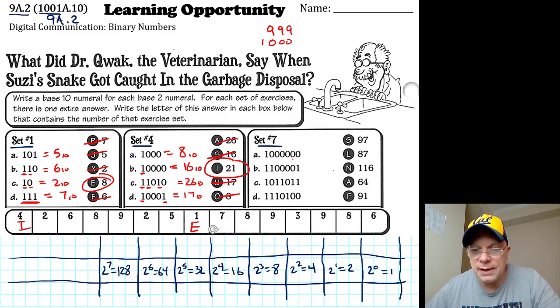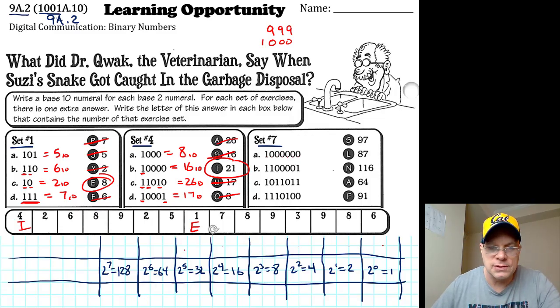Here I need to count how many digits. This is one, two, three, four, five, six, seven. So the seventh place value is the sixty-fourth place. And if all I have is a sixty-four and nothing else, I have sixty-four.